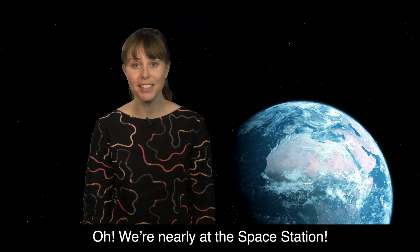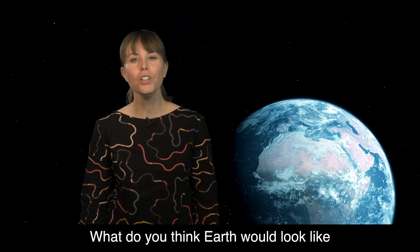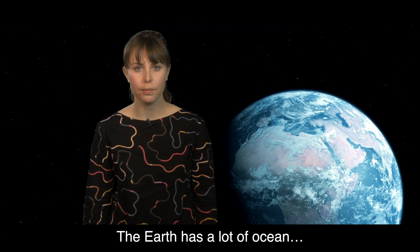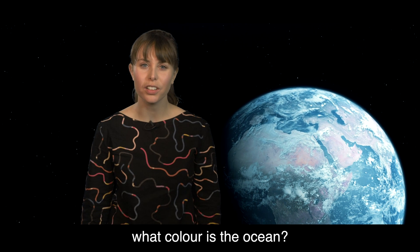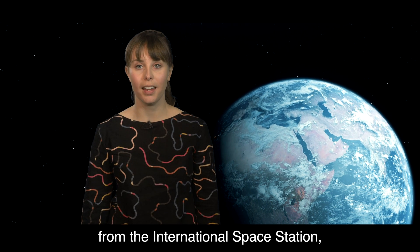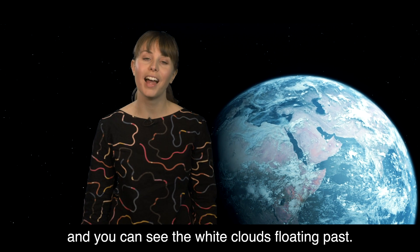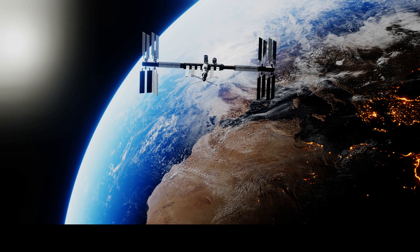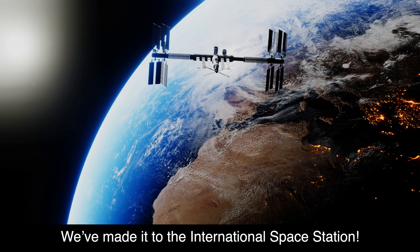Oh, we're nearly at the space station. What do you think Earth would look like from the International Space Station? The Earth has a lot of ocean. What colour is the ocean? It's blue. The Earth looks blue from the International Space Station. And you can see the white clouds floating past. There it is! We've made it to the International Space Station!